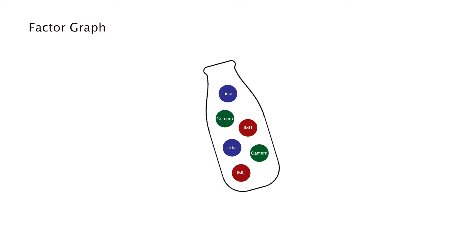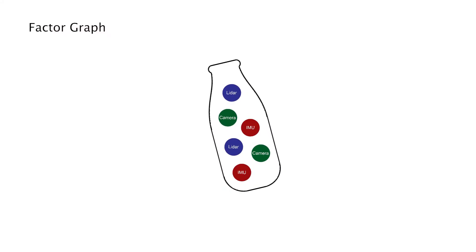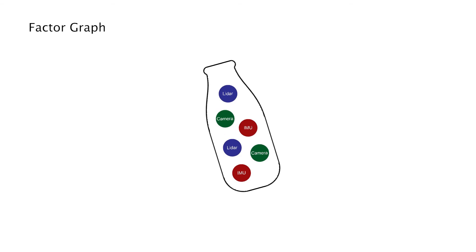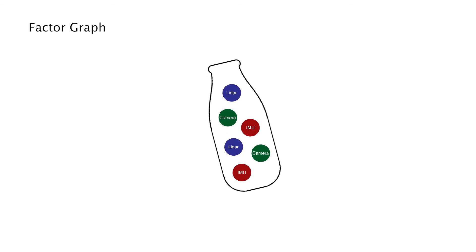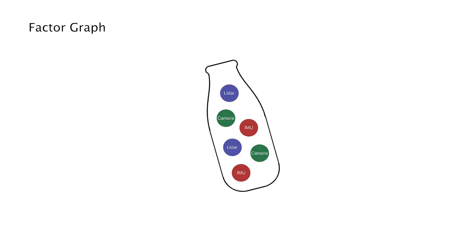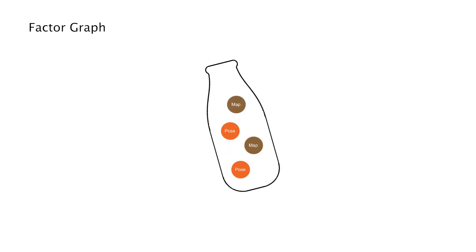The second approach is called factor graph optimization. This is a full-blown optimization problem — you can think of it as a milkshake. We take all the data from all the sensors and formulate this large optimization problem, then solve it in one step.